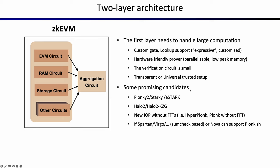Here are some promising candidates for the first layer. From Polygon, there is Plonky2, Starky, and eStark — basically using a Plonk-like IOP but using FRI as a polynomial commitment scheme. These have nice properties like Plonky2 using a smaller field called Goldilocks, which is 64-bit and fits into a CPU register so computation is much faster. They support custom gates, lookups, are hardware-friendly, have a smaller verification circuit, and have a transparent setup. Another promising category is Halo2 or the Halo2-KZG version. Halo2 was initially developed by the Zcash team using Plonkish organization on the front end with very flexible support for custom gates and lookups. But Halo2 initially uses an inner product argument with a Pasta curve — Pasta curve is not directly supported on Ethereum layer 1, and because of the logarithmic verification complexity from the inner product argument, verification would be very expensive on EVM.